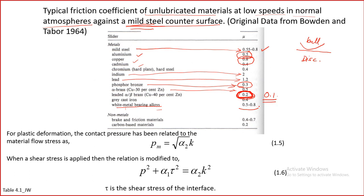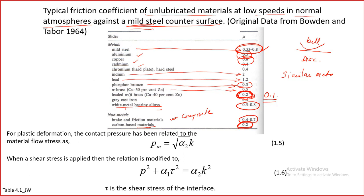White metal bearing alloys have a quite high coefficient of friction. For non-metals, brake material is a complex composite with higher coefficient of friction. Carbon-based materials such as CNT or graphite also have values that are quite changeable depending on environment and how the test is conducted. One important thing to note: when the two materials are the same — for example mild steel against mild steel — the coefficient of friction is very very high. Two similar materials will give very high coefficient of friction, especially metals.